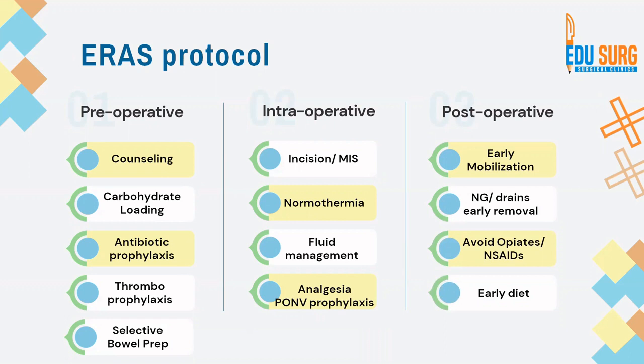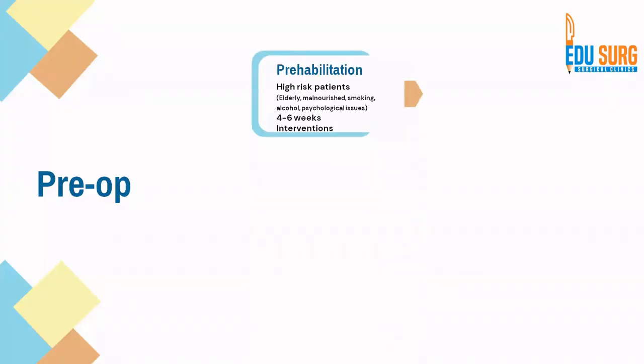Now we will see some of the modifications required when discussing application of ERAS guidelines in liver surgery, based on the article published in 2022. In the pre-operative phase, apart from the points already discussed, some important points that have been updated include pre-habilitation — that is, optimizing the patient for surgery.